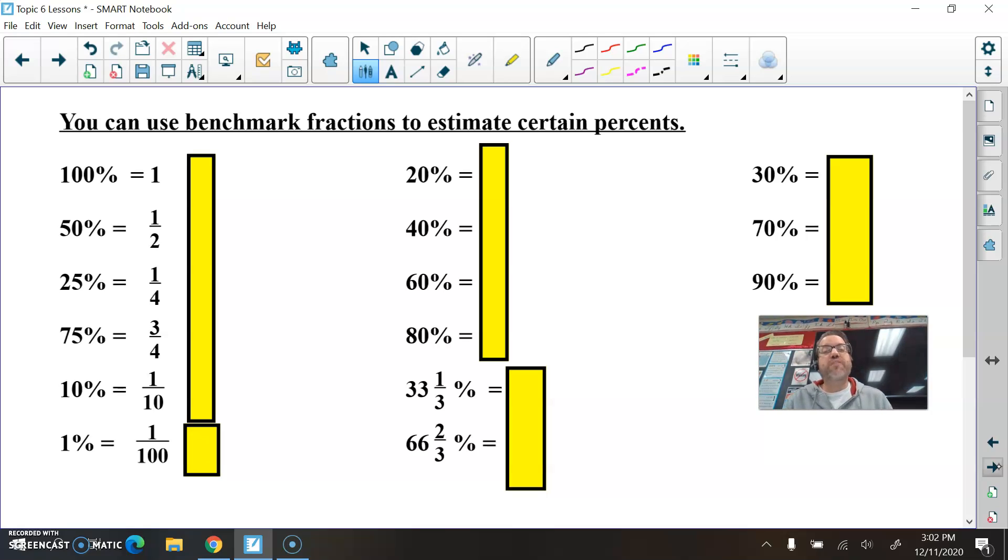So here are some benchmark fractions that we can use when estimating percents. You know 100% is one whole. We talked about that yesterday. Hopefully you know 50% is one half. 25% is one fourth. 75% is three fourths. You definitely need to know all of these. These here are also good to know. 10% and 1%. That's one tenth and one out of 100 in fractional forms. Those are extremely useful to know.